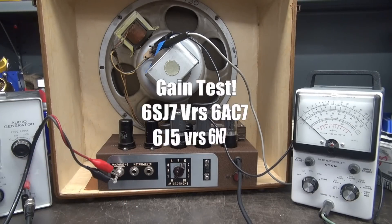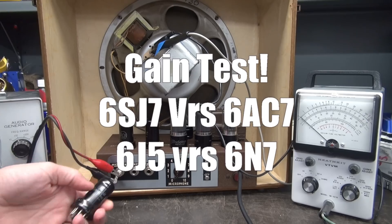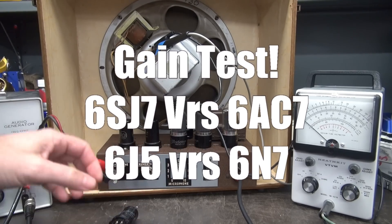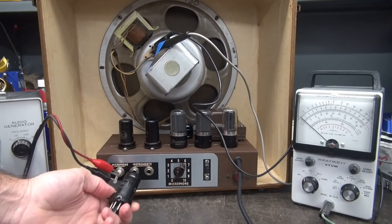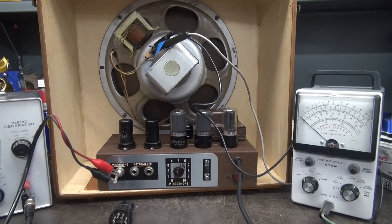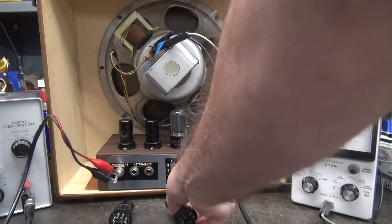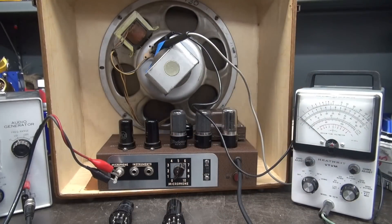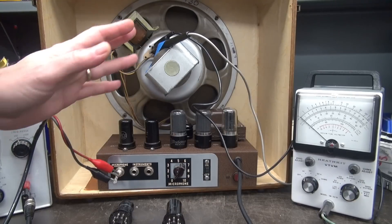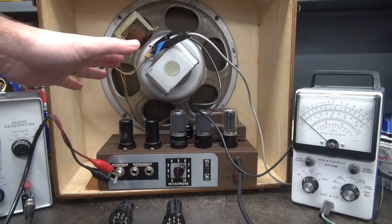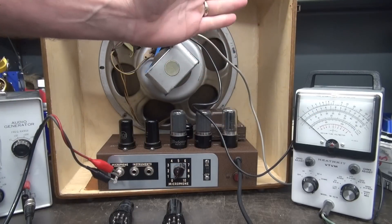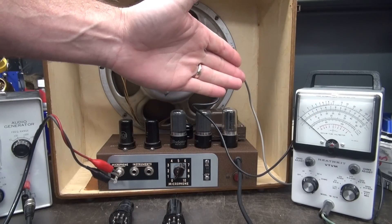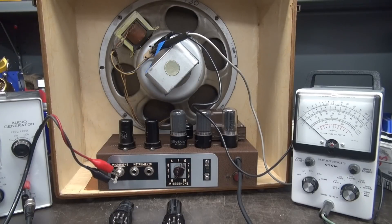All right so for the fun of it we'll do a little gain comparison. I have the stock tubes installed the 6SJ7 6J5. Here is the 6AC7 preamp and here is our 6N7. So what I'm going to do I've got the VTM rigged down to the speaker. I'm just going to bring up the volume to where we see mid scale. I'm at the 1.5 volt AC scale on the VTM.